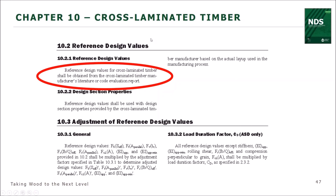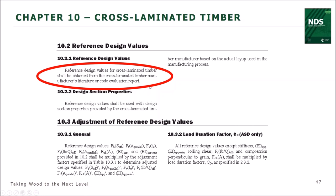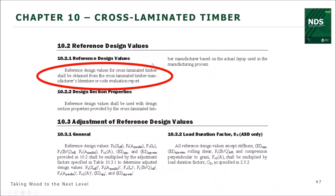For cross-laminated timber design values, you go to the manufacturer's literature or code evaluation report, since it is a proprietary product and each manufacturer may have different capacities. One very good resource is APA — the Engineered Wood Products Association. Their webpage on CLT lists CLT manufacturers who are members of APA, as well as product reports. There are three types of reports: from APA directly, an ER report often from ICC-ES, or a combined APA/ICC report.